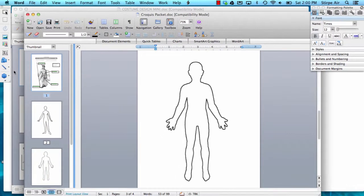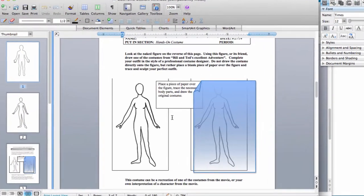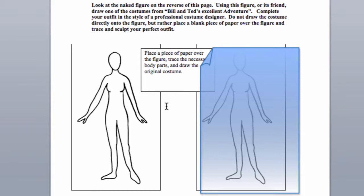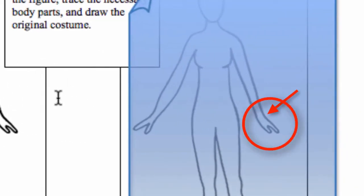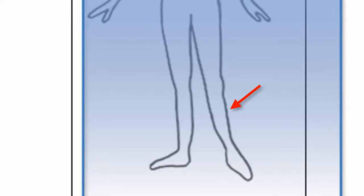Let me show you how it works. Essentially, what I do is I place a piece of paper over the figure and I draw the original costume. And when I'm done, I trace the necessary body parts that have not been covered by clothing. I only bring over the parts of the body that are not covered by clothing. So in other words, if I did a sleeve and the sleeve went down to about here, then I would trace the hand when I'm done. If I did a dress and it went down to here, then I would trace the legs when I'm done.